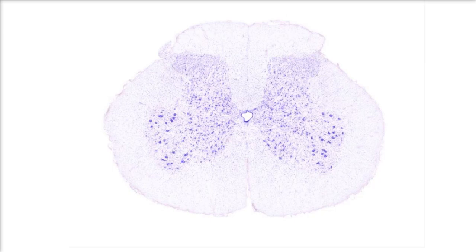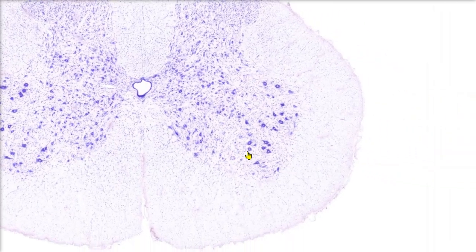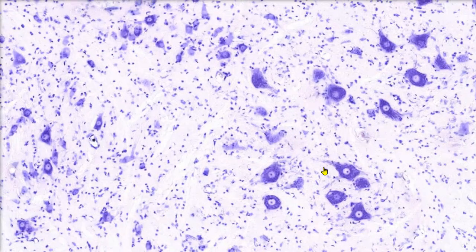The current slide that we're looking at is a cross-section of the spinal cord. We're going to zoom in on this anterior horn to see a very large motor neuron. Let's zoom in on this location.